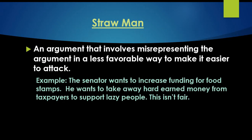A strawman argument involves misrepresenting an argument in a less favorable way to make it easier to attack. For example, the senator wants to increase funding for food stamps — he wants to take away hard-earned money from taxpayers to support lazy people, and this isn't fair. The senator may want to increase funding because people are working hard but still can't afford to live due to the high cost of living. The argument was framed to misrepresent his intent. You'll see this a lot in politics.